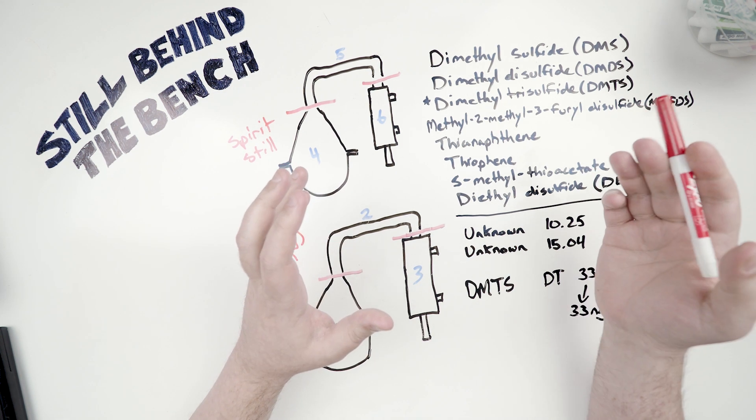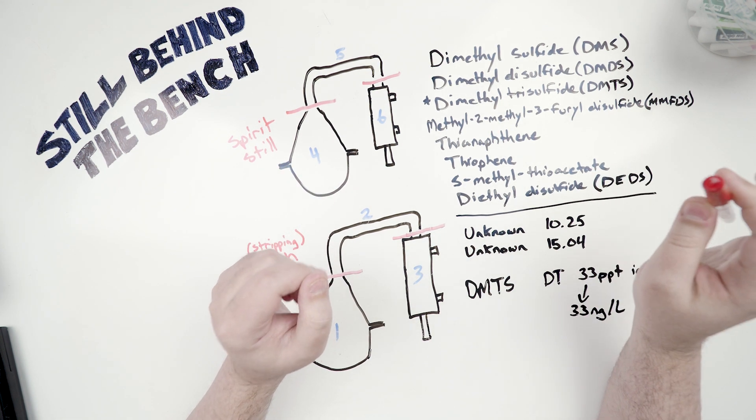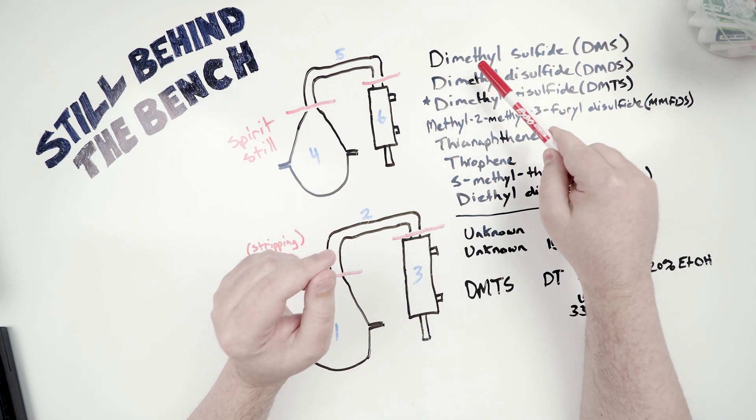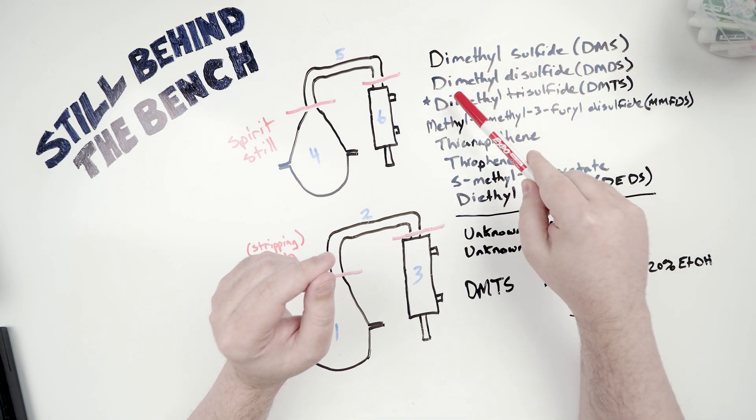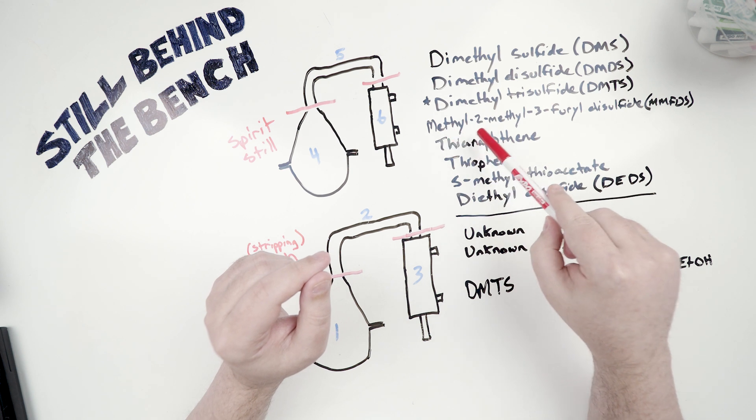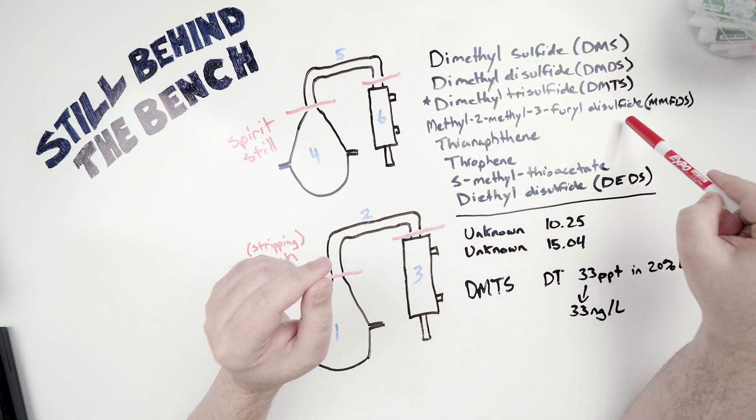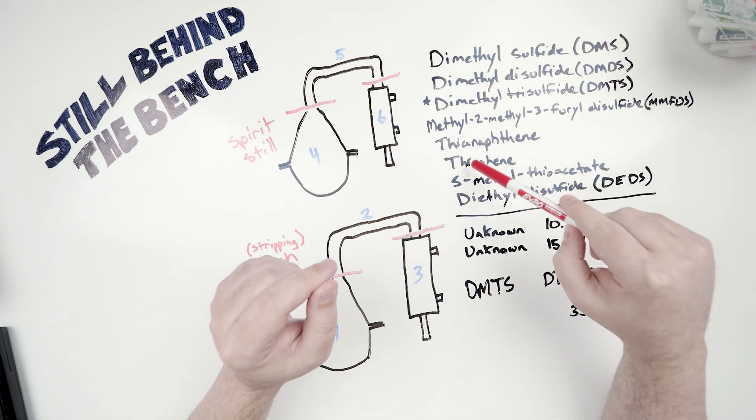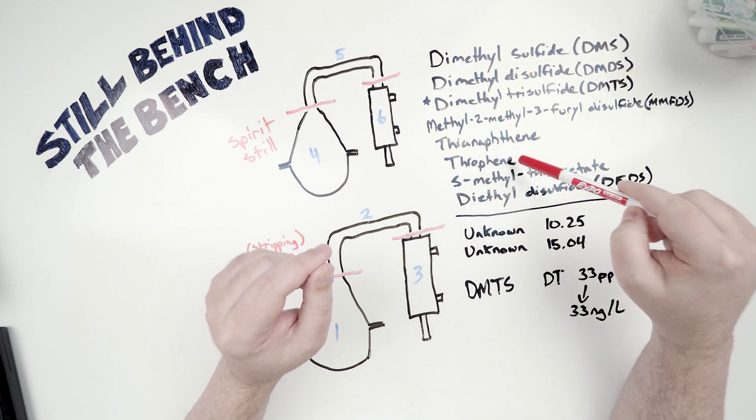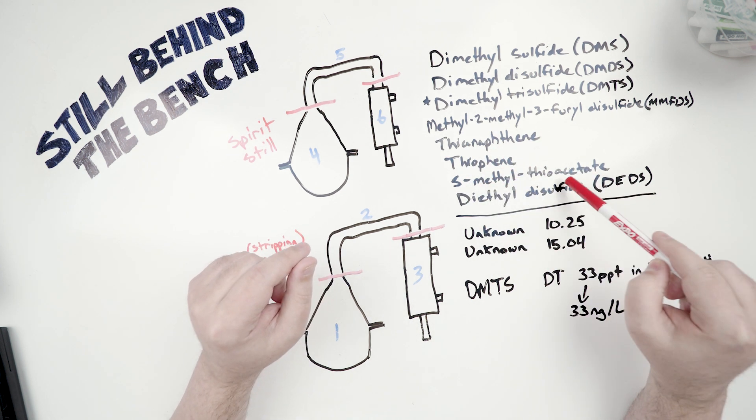They also did test other sulfur compounds. DMTS isn't the only one. They also checked for dimethyl sulfide, dimethyl disulfide, methyl 2, methyl 3, furyl disulfide, thionapthene, thiophene, S-methyl thioacetate, and diethyl disulfide.